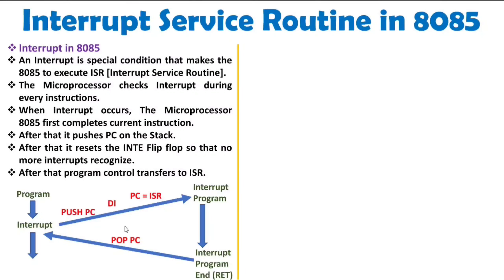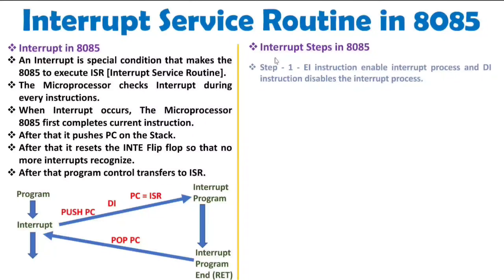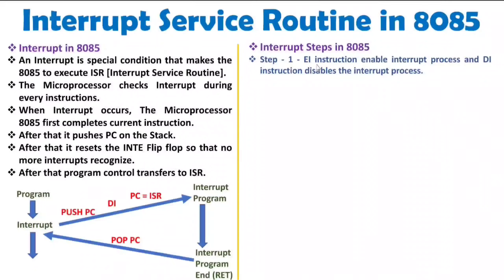There are a few steps we need to understand here. Interrupt steps in 8085 involve two key instructions. One is the EI instruction — enabling the interrupt process — and the second is the DI instruction — disabling the interrupt process. The DI instruction is not executed by the programmer; it is executed internally by 8085. But the EI instruction is very essential and is written by the programmer during the interrupt service routine.